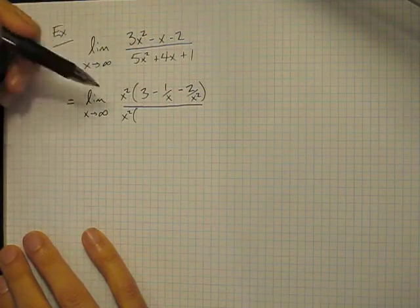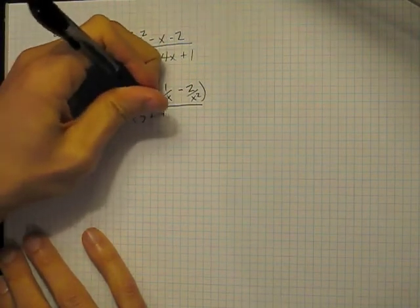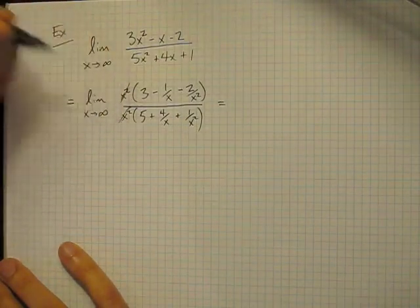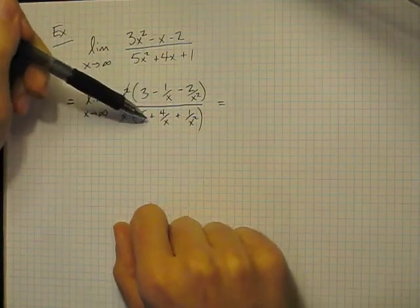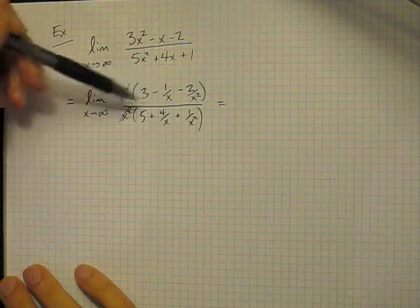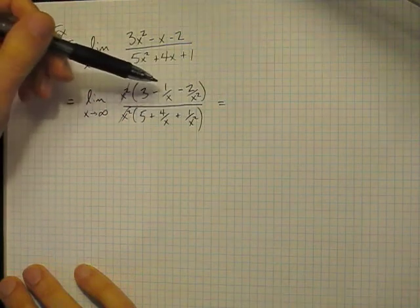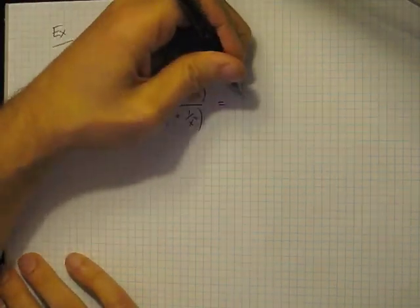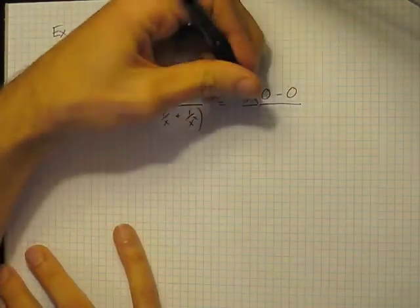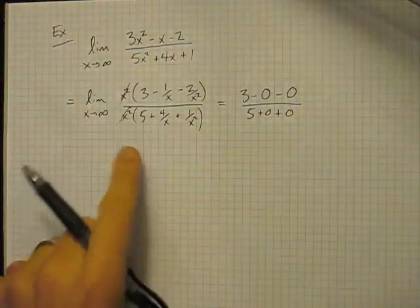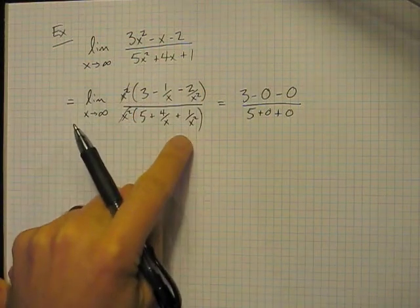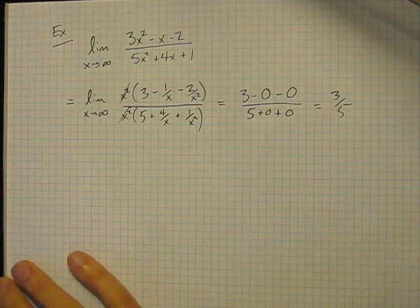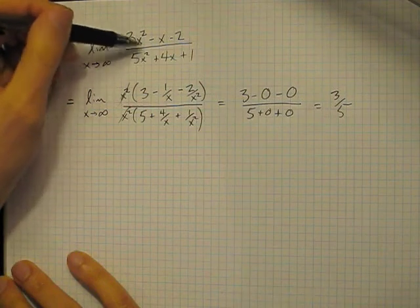That's what we get if we factor a power of x squared from the top of this fraction. And then similarly, let's factor x squared from the bottom: 5 plus 4 over x plus 1 over x squared. Now that we've done that, we can of course cancel those two copies of x squared. Now let's use our previous result: 1 over x is approaching 0, 2 over x squared is approaching 0, 4 over x and 1 over x squared are all approaching 0 as x goes to infinity. So the limit is equal to 3 minus 0 minus 0 over 5 plus 0 plus 0. All the remaining terms go to 0, and so this will approach 3 fifths. Notice that 3 fifths is the ratio of the leading coefficients when the highest powers are matched.